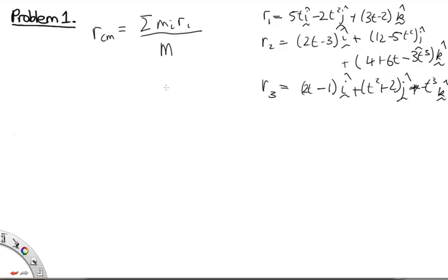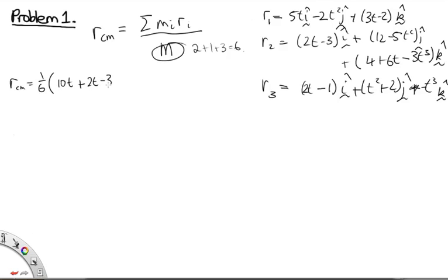Let's work out the radius of the center of mass. We'll need to consider the i, j, and k components separately, as they're all in completely different directions. The total mass m is 2 plus 1 plus 3, which is 6. So r for the center of mass is equal to 1/6. We do 2 times the i component of R1, giving 10t, plus 2t minus 3, plus 3 times the i component of R3, giving 6t minus 3. So that's 18t minus 6 in the i direction.